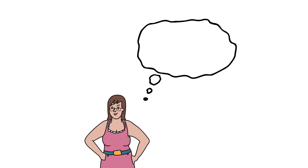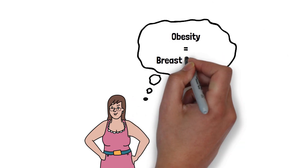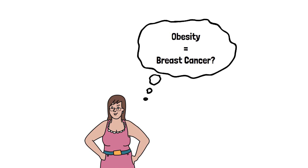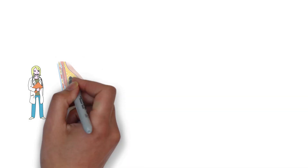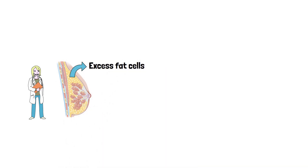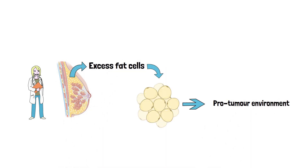I thought I was coming in for breast cancer screening. How does being overweight increase the risk of being diagnosed with breast cancer? The breast tissue is highly composed of adipose tissue, meaning that fat cells make the majority of the microenvironment where tumors can form. When there's excess adipose tissue, it can lead to the creation of a pro-tumor environment.